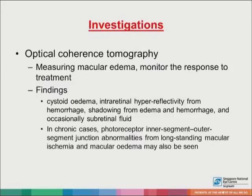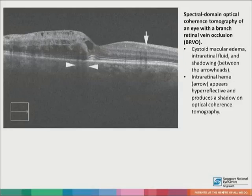Optical coherence tomography measures macular edema severity and also helps monitor the response to treatment. Findings on OCT include cystoid edema, intraretinal hyperreflectivity from hemorrhage, shadowing from edema and hemorrhage, and occasionally subretinal fluid. In chronic cases, inner segment/outer segment junction disruption from longstanding macular ischemia and edema may also be seen. This is a spectral domain OCT of an eye with BRVO. Cystoid macular edema, intraretinal fluid, and shadowing can be seen. Intraretinal hemorrhage appears hyperreflective and produces a shadow on OCT, as seen by the arrow.